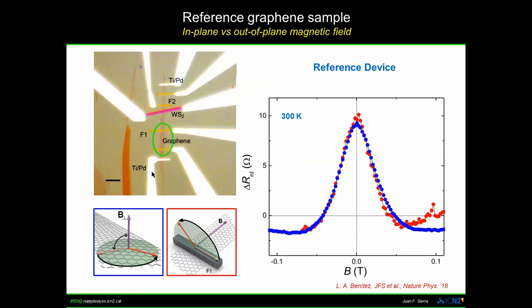Let me start by showing what happens in pristine graphene. We measure two spin signals: applying the magnetic field out of plane gives access to the in-plane spin lifetime since the spins precess in-plane, and applying the field along the spin channel gives access to the out-of-plane spin lifetime. You see there is no difference between these two configurations, telling us that pristine graphene is an isotropic system — no difference in lifetimes whether spins precess in-plane or out of plane.